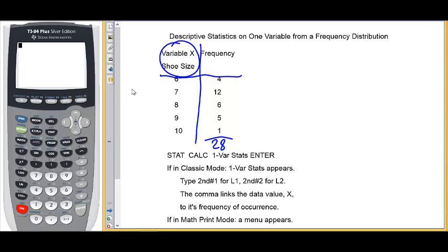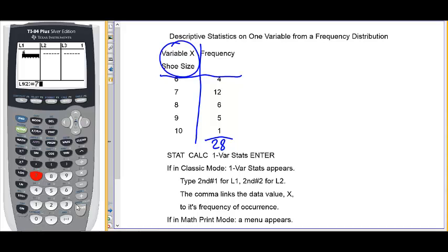So, over to the calculator, to stat, and under edit. In list 1, we'll put the shoe sizes. 6, 7, 8, 9, and 10.